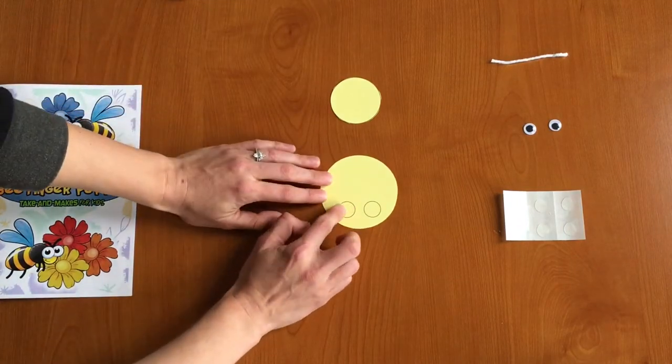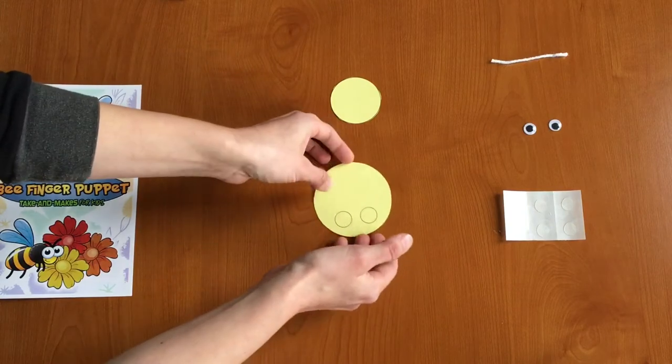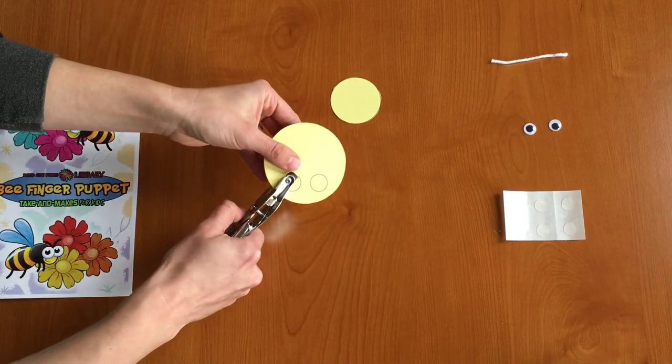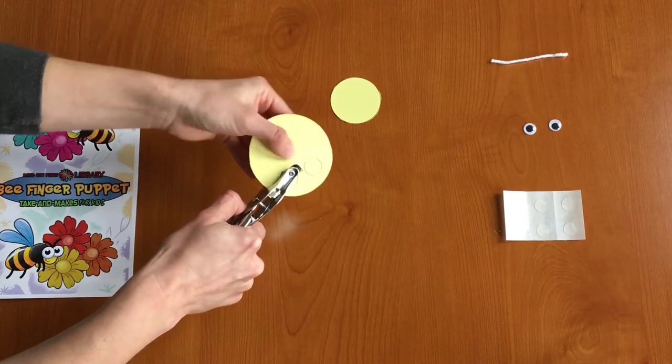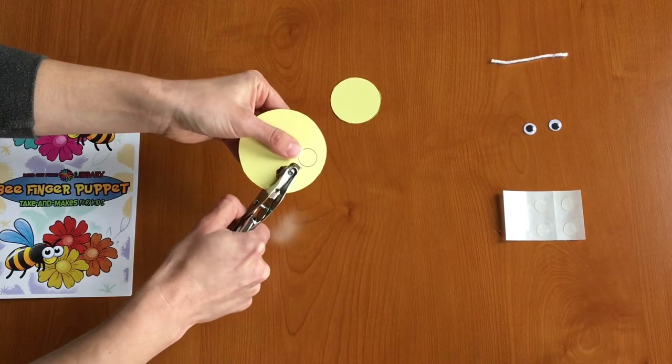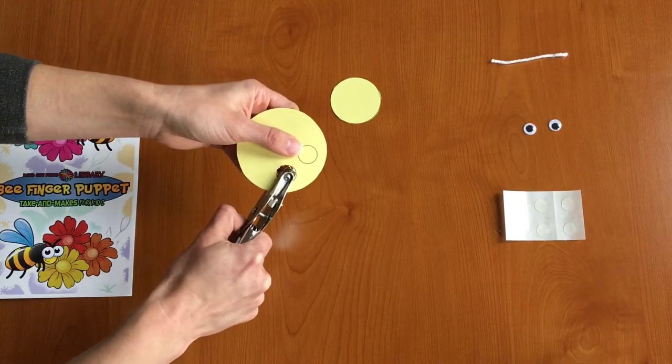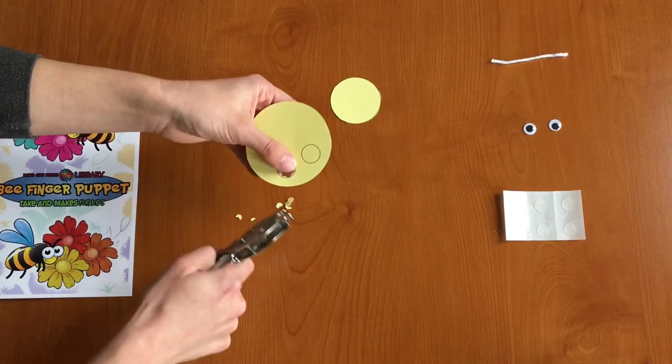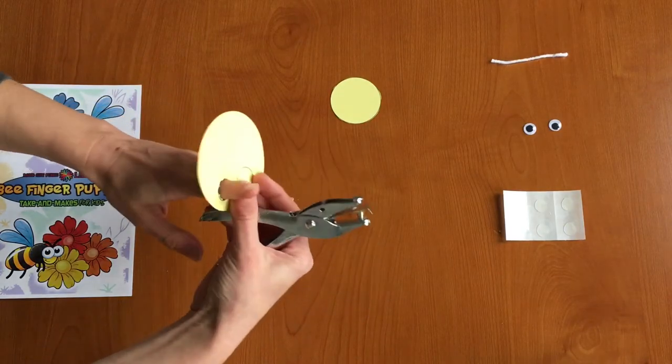Now next we want to cut out these small little circles. So you can have an adult help you here or you can take a hole punch and you can start punching out the center and make a circle that way. So it doesn't need to be perfect. That's all right.